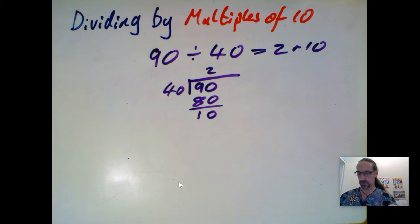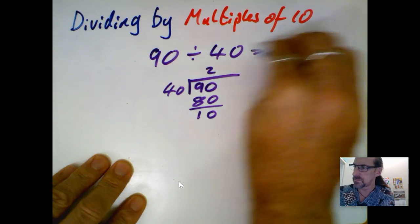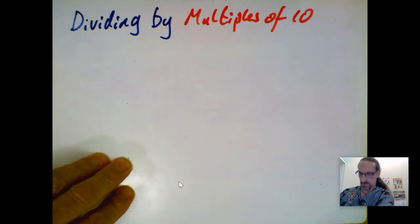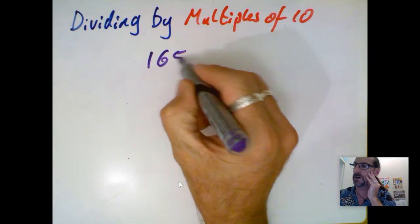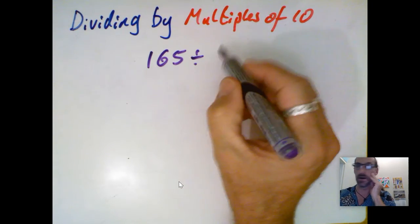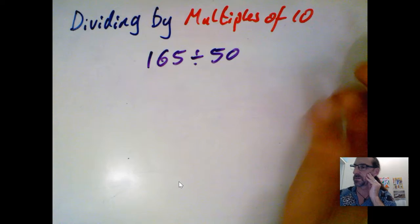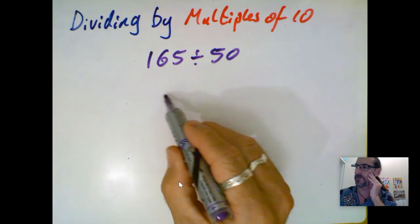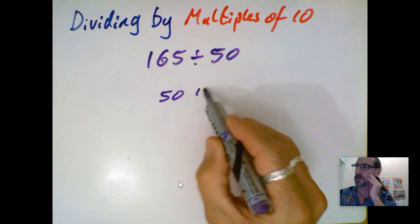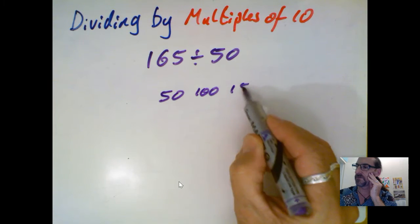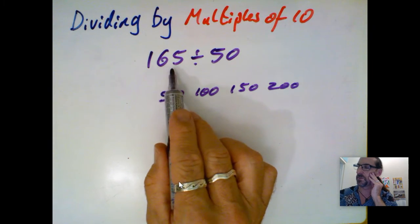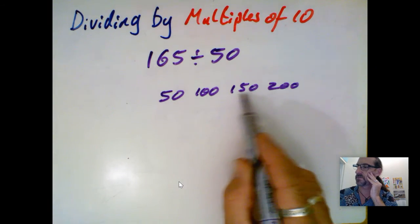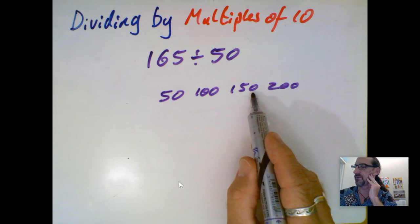So let's look at a larger one, for example, let's take 165 divided by 50. So I'm going to count in 50s: 50, 100, 150, 200. Right, I've gone over my 165, so it was three lots of 50, or less than my 165.